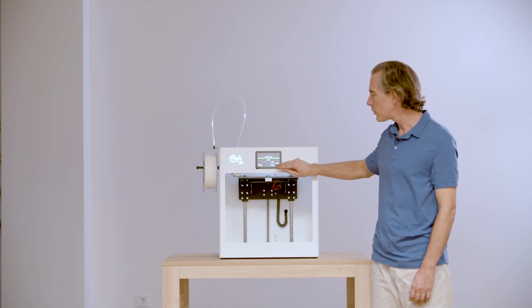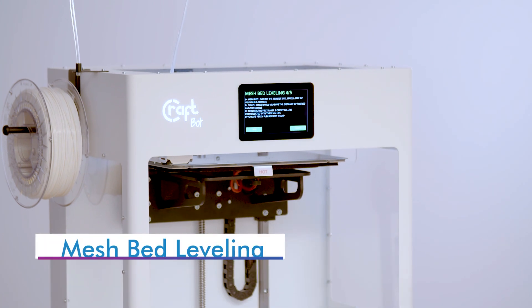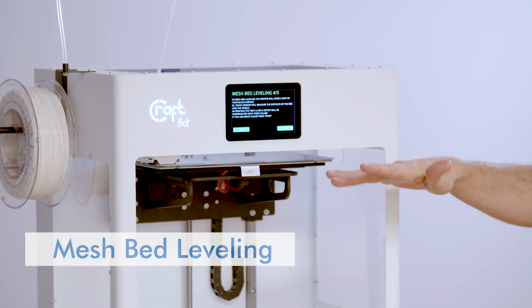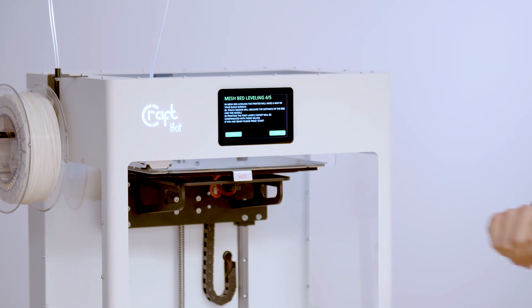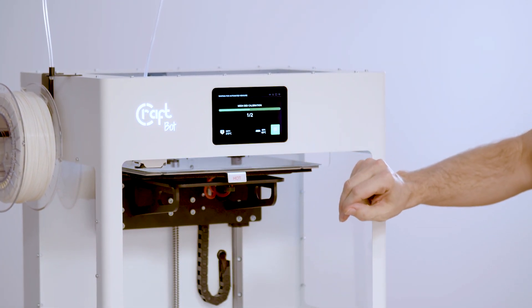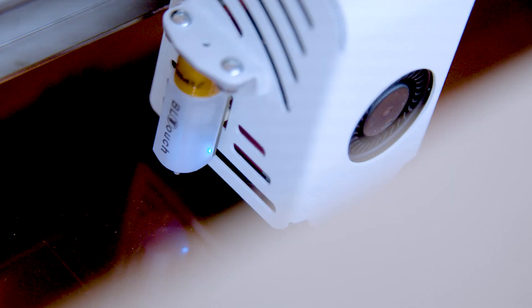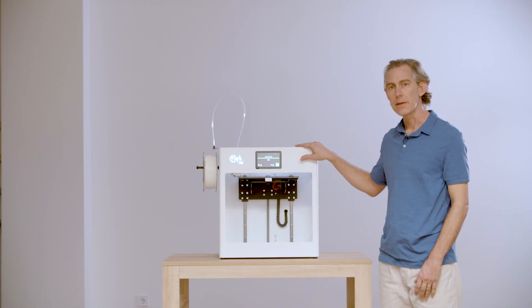The next step of our calibration wizard is going to take us through mesh bed leveling, which is going to check the build plate at various positions in order to make sure that there are no inconsistencies. Now our mesh bed leveling is complete. We're ready to move on to the next step of the wizard.